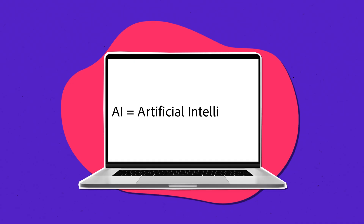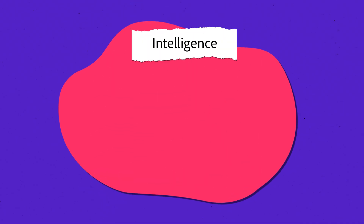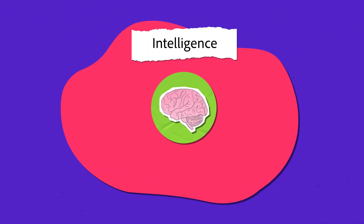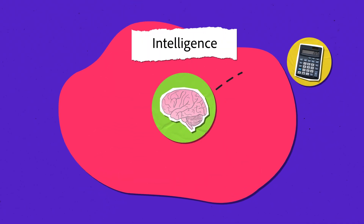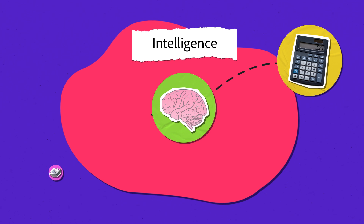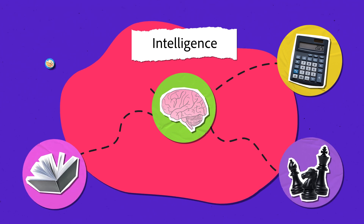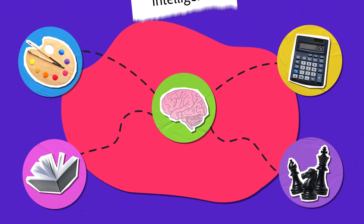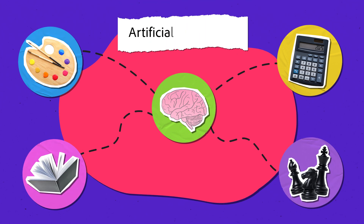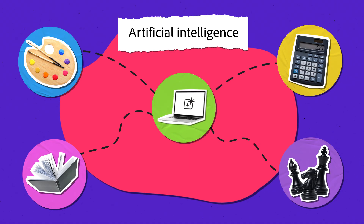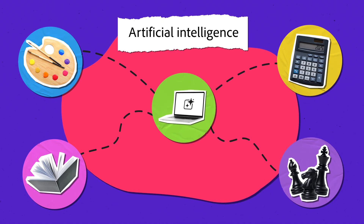You probably know that AI stands for artificial intelligence. Intelligence is usually associated with human tasks like doing math, remembering large amounts of data, playing chess, or creating things. And so artificial intelligence is simply the name for when computers can do those kinds of intelligent tasks as well.